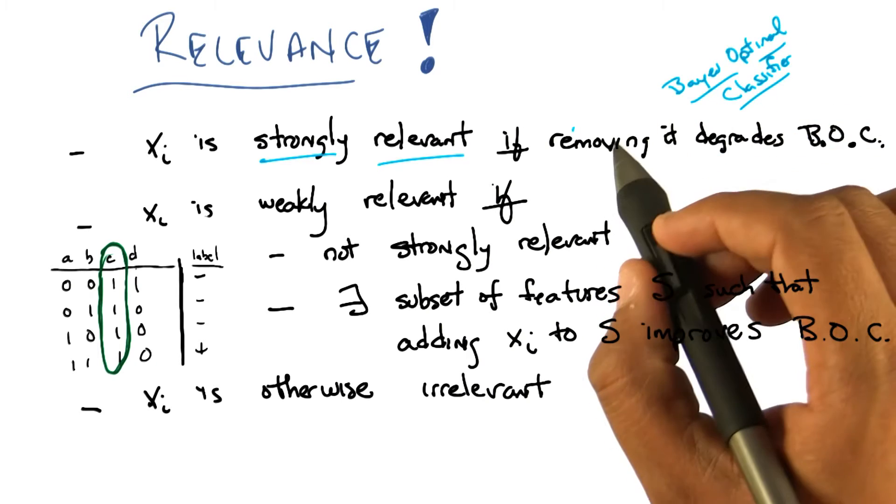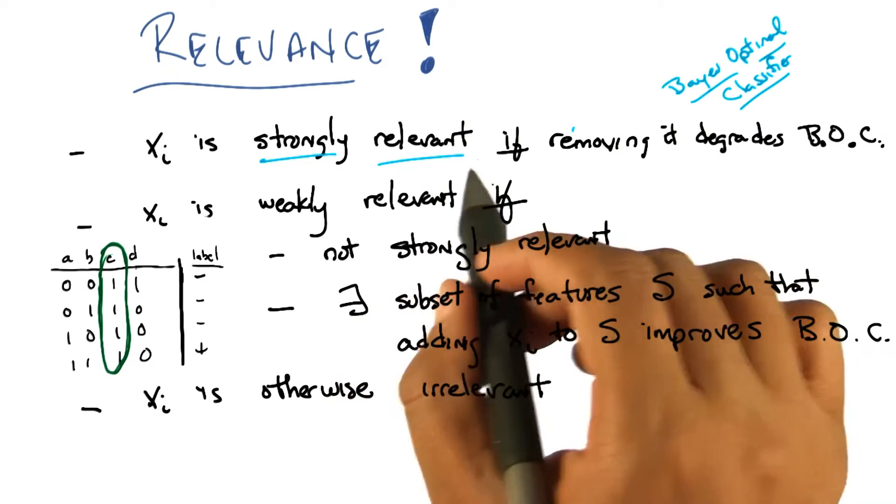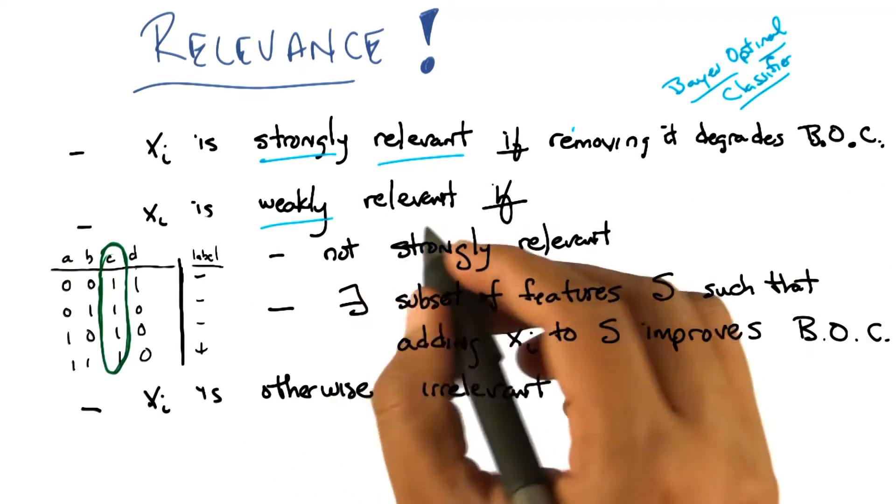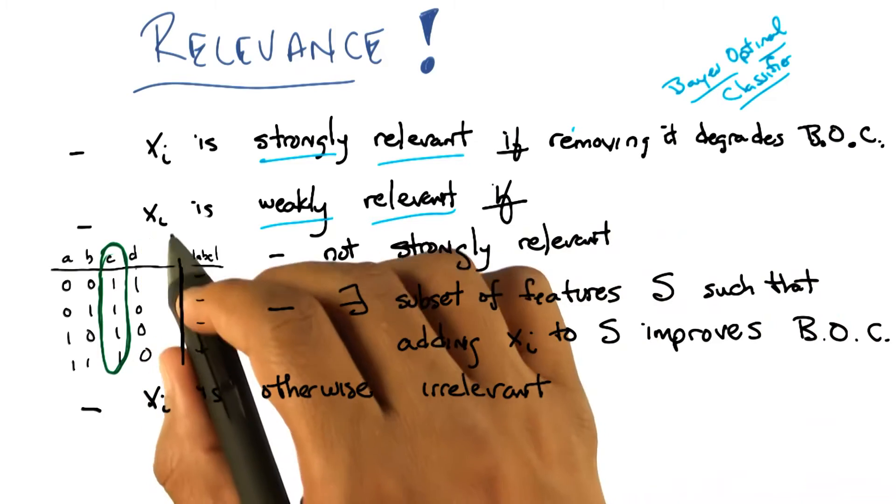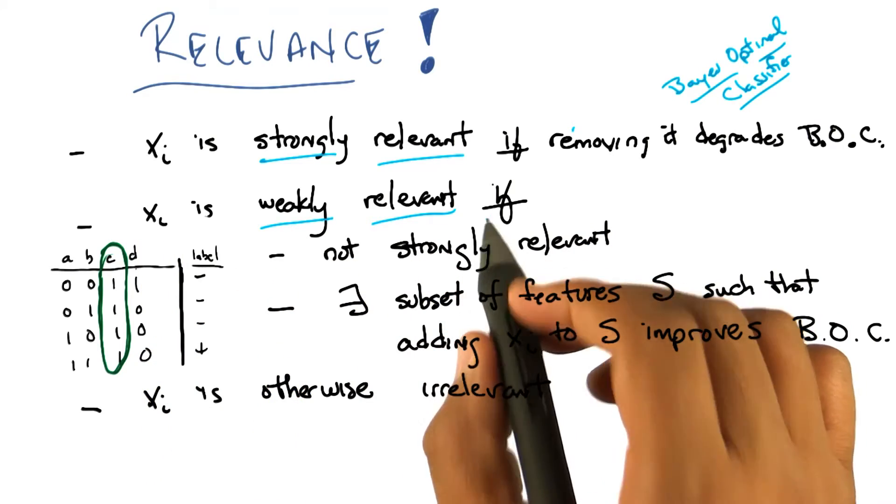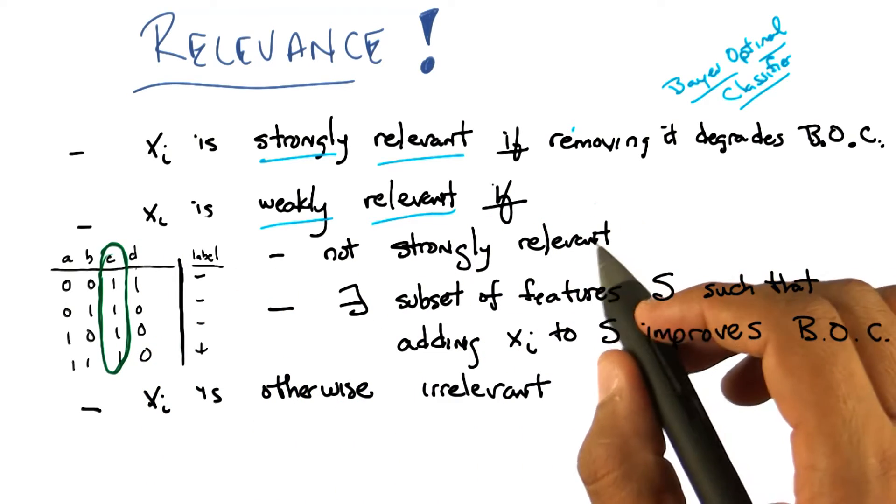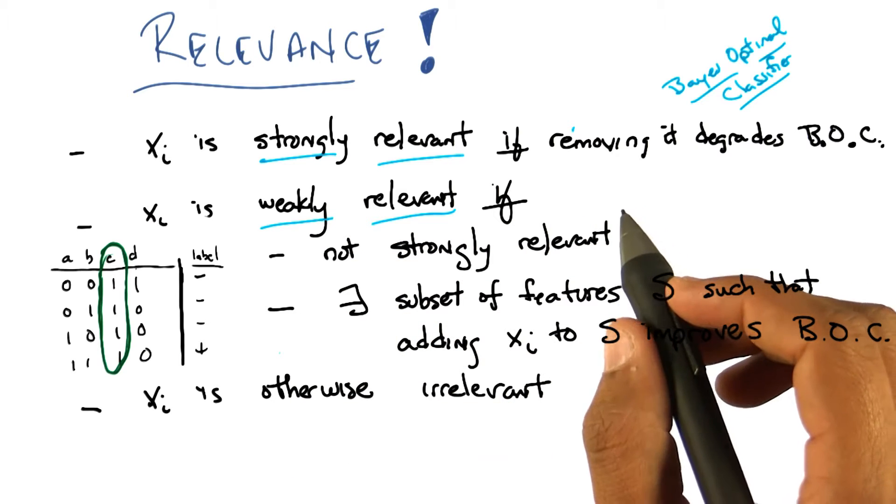Right, exactly. And that little difference you just noted is the difference between being strongly relevant and being weakly relevant. So a variable, a feature, is called weakly relevant if it's the case that it's not strongly relevant. So the order of these definitions matter.